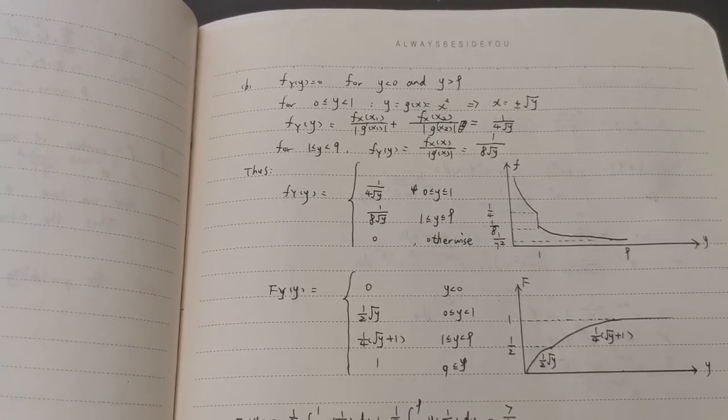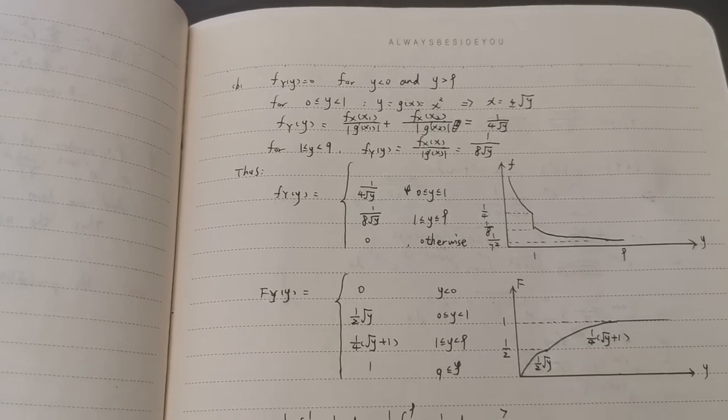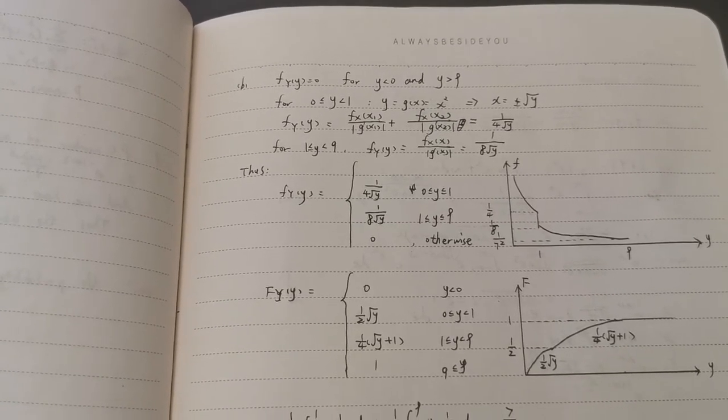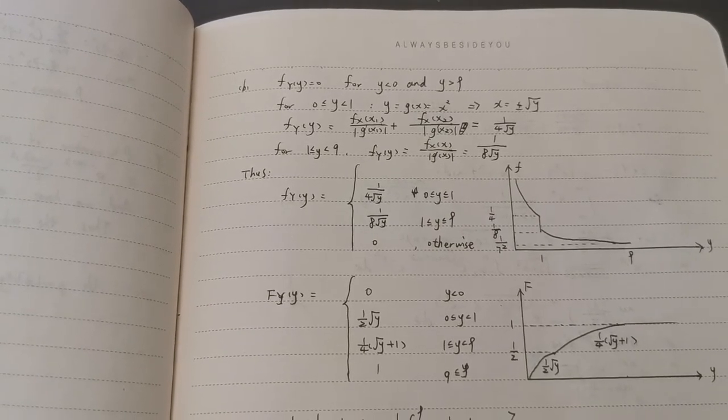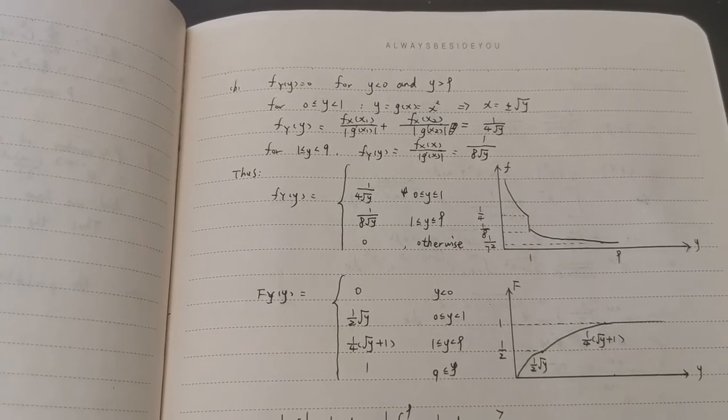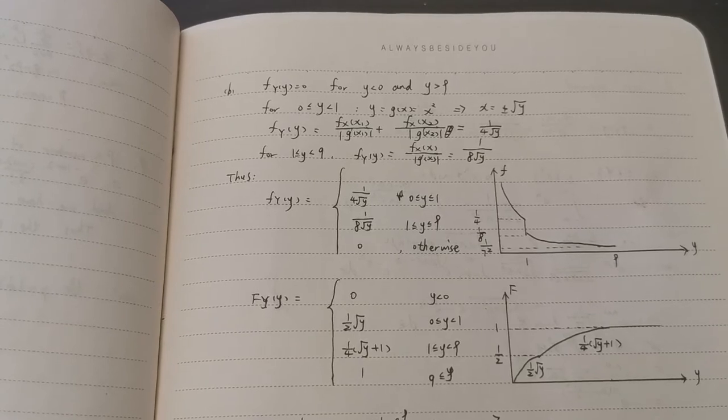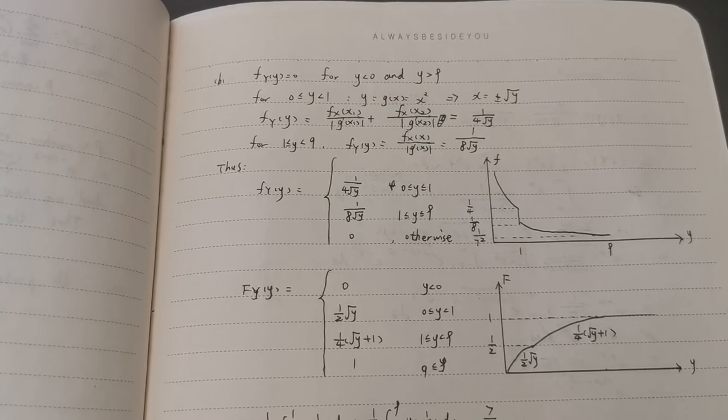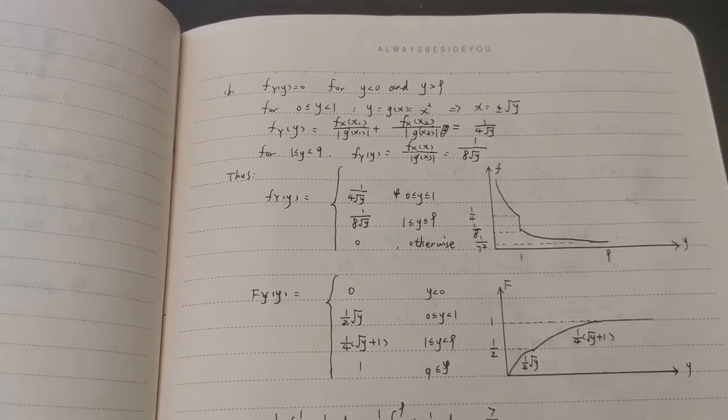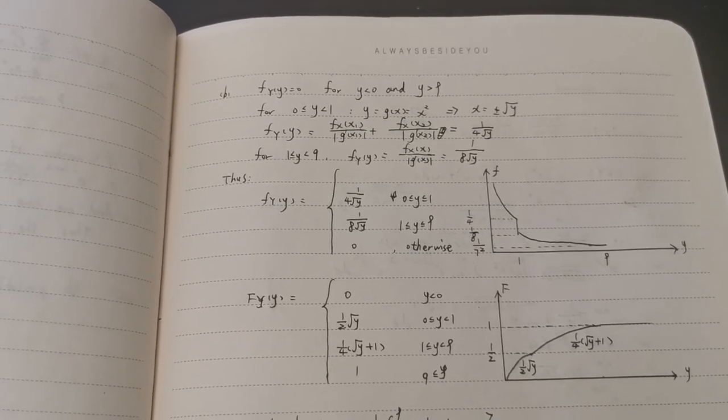And for 0 smaller than y smaller than 1, there are two roots: x equals root y or minus root y. Thus, we can calculate lowercase fy.